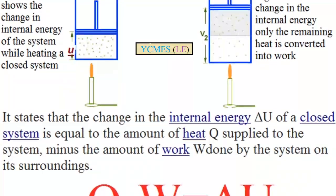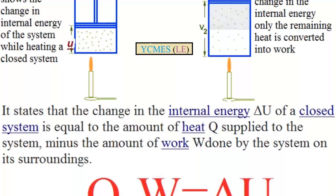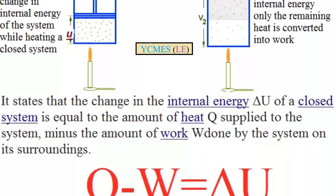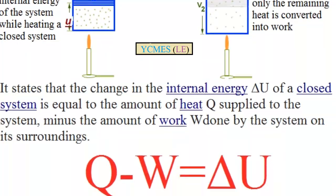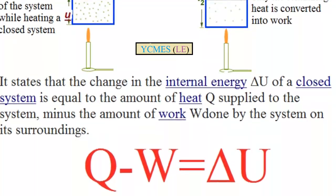The internal energy change is measured in joules. We write it as delta E or delta U.